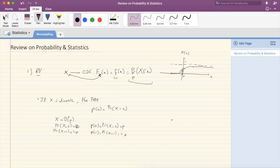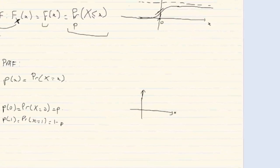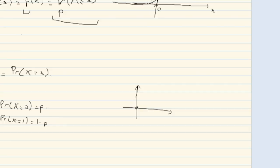If you plot the PMF, it has only two peaks at 0 and 1; otherwise it is zero, because X will never take any value other than 0 or 1. At 0 the height is p, and at 1 it is 1 minus p.